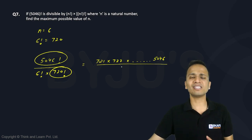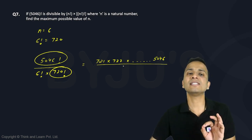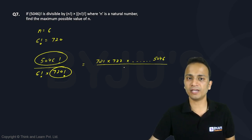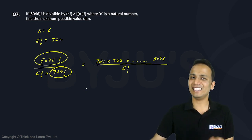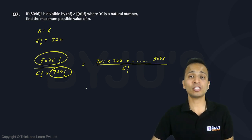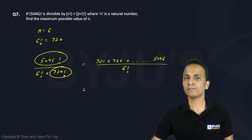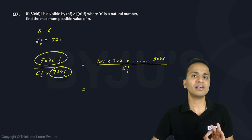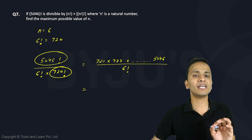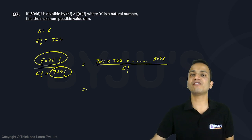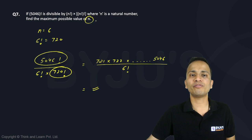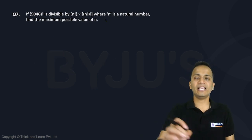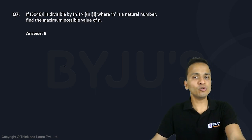We have more than 4000 consecutive numbers in the numerator, and we need to check divisibility by 6 factorial. You can clearly say that a product of more than 4000 consecutive numbers is definitely divisible by 6 factorial — we only need 6 consecutive numbers in the product to guarantee divisibility by 6 factorial, and we have far more than that. So the maximum possible value of n is 6. That's the correct answer. Let's move on to question number 8.